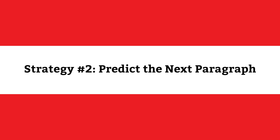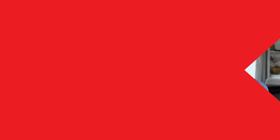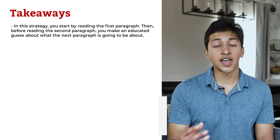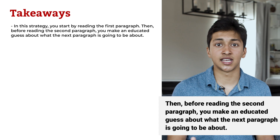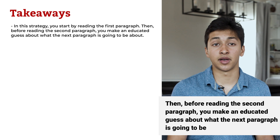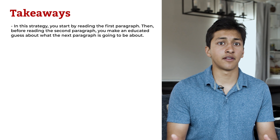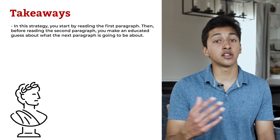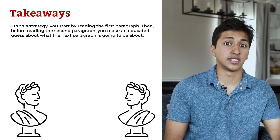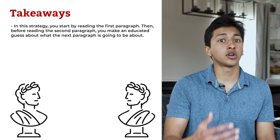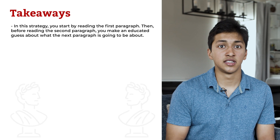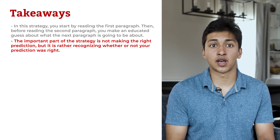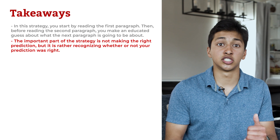MCAT CARS strategy number two: predict the next paragraph. In this strategy, you start by reading the first paragraph. Then before reading the second paragraph, you make an educated guess about what the next paragraph is going to be about. For example, if the first paragraph introduced a famous Greek poet, the second paragraph might introduce another famous Greek poet, talk about an example of the poet's works, or criticize the poet's work. The important part of the strategy is not making the right prediction, but rather recognizing whether or not your prediction was right.